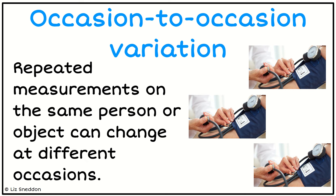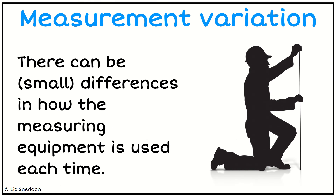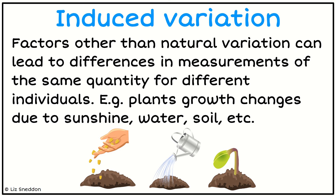We've got measurement variation — that's looking at how accurate your measurements are. That's why we want to look closely at the details of what instructions were given to people and what equipment they used. We've also got induced variations — these are variations that, other than your natural variation, can lead to differences.